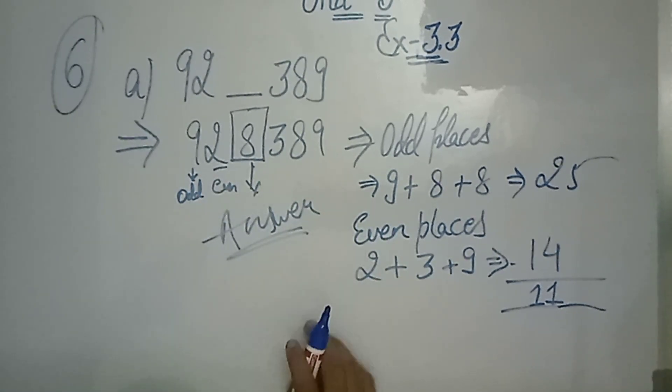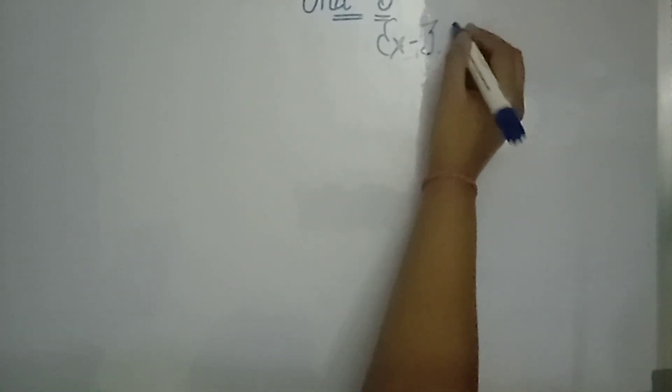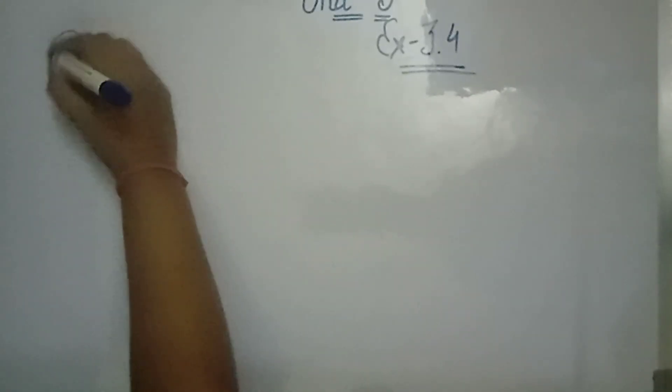The second part of it, you will do it yourself. Now let's go to the next exercise, Exercise 3.4. What is the first question? We have to remove factors.